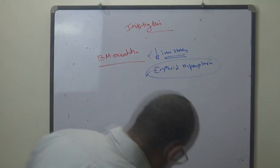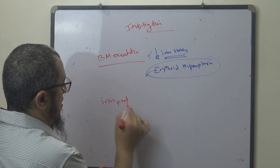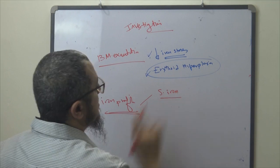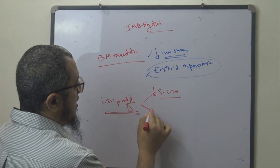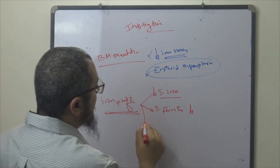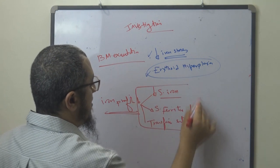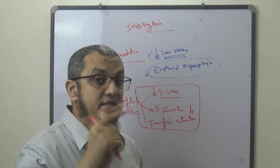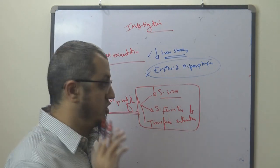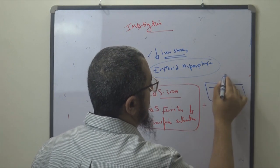Bone marrow examination is not commonly done in iron deficiency anemia. Another very important investigation is the iron profile. In the iron profile: serum iron is low, serum ferritin is also low, and transferrin saturation is also low — all these indicators are low. However, total iron binding capacity (TIBC) is high.